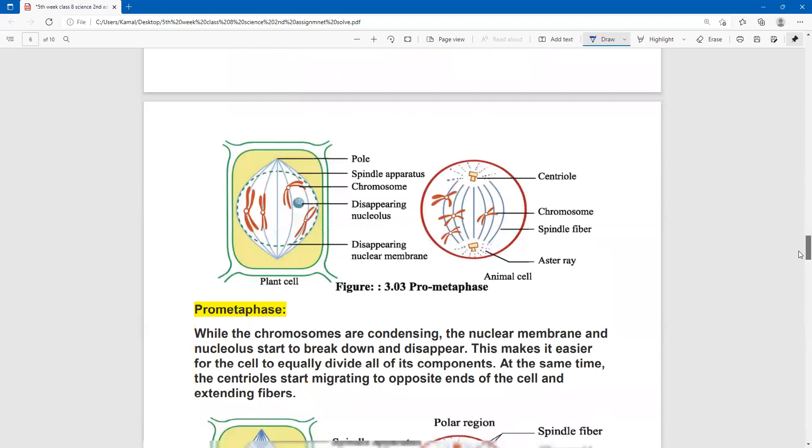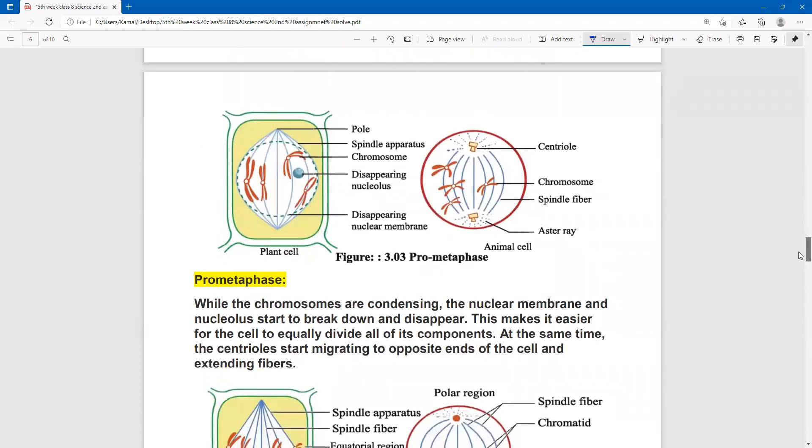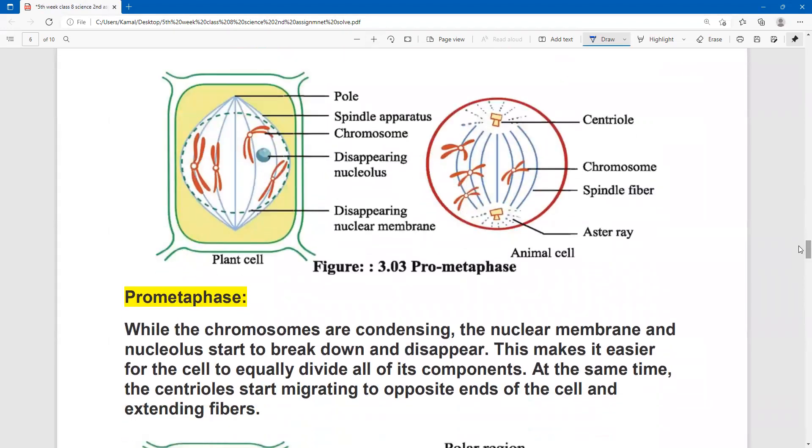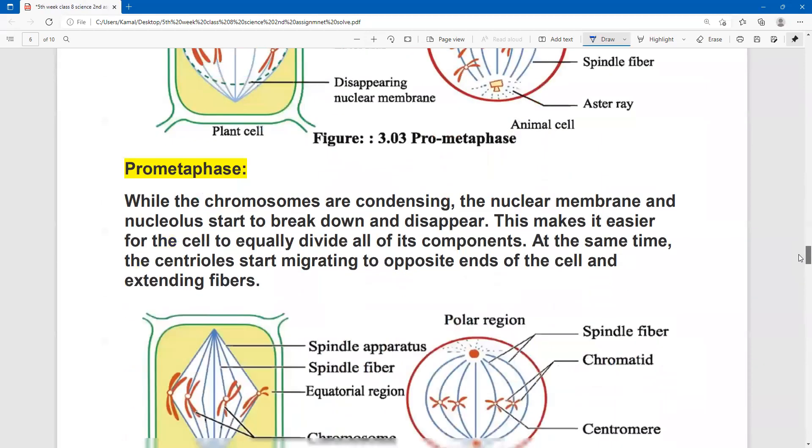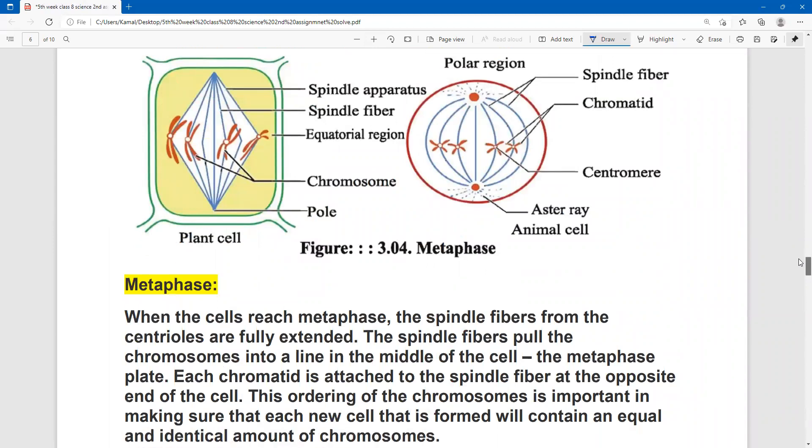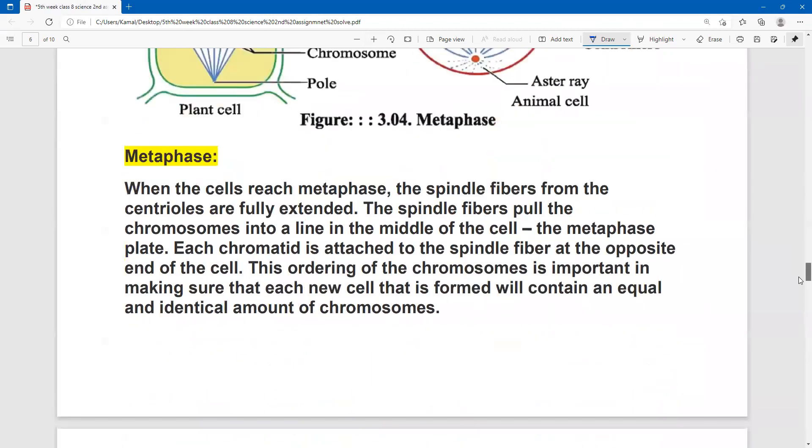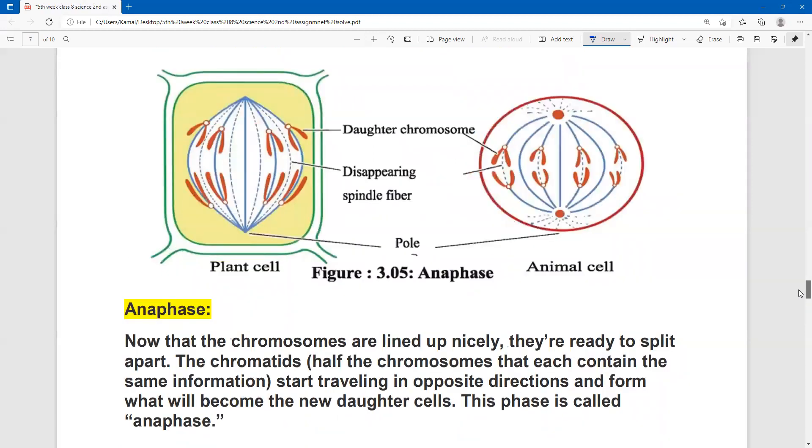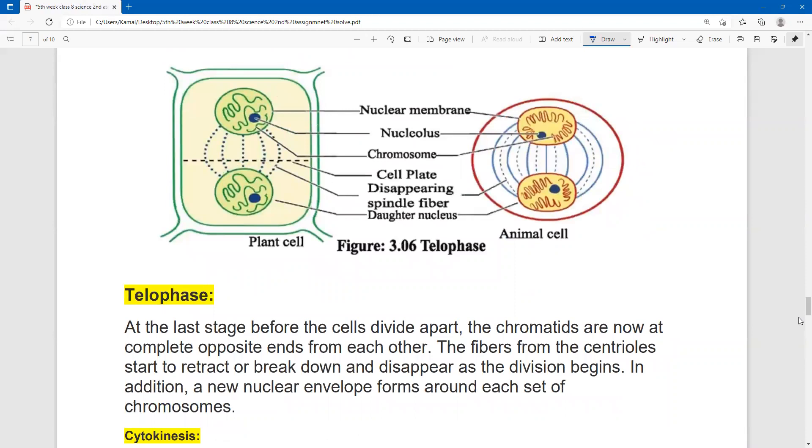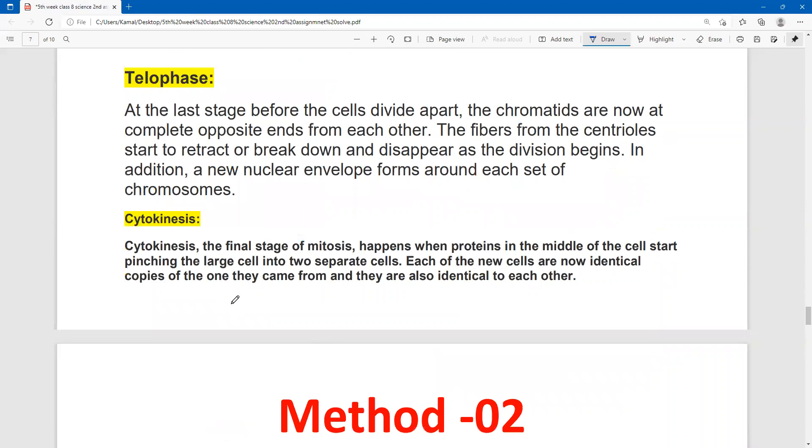Then second, prometaphase. Here this is prometaphase. Then third stage, metaphase. If you take the pictures, metaphase. And the next stage, anaphase. Telophase. And then cytokinesis. So this is method one done.